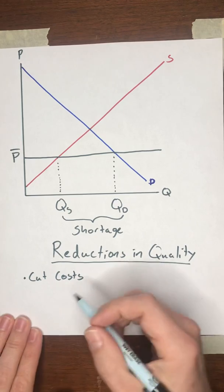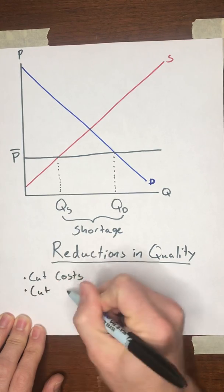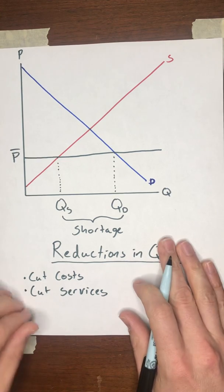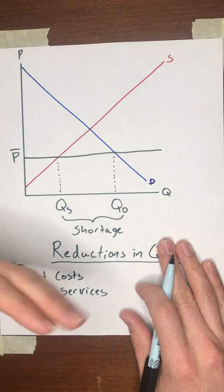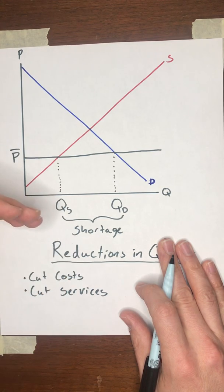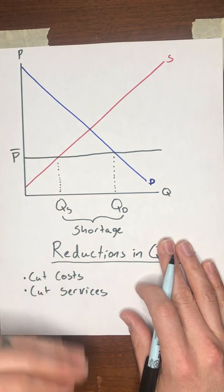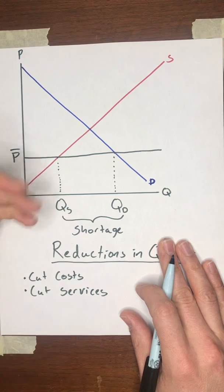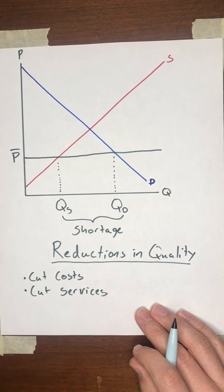You can also, reducing costs doesn't just mean reduce the value of the product. You can also cut services. So, if you're running a restaurant, for example, and there's now a maximum price that you can charge for your food, one way that you might cut costs is lay off some of your staff and you don't have people that you're hiring to wait tables anymore or to bus the tables. Instead, you put that work onto your customers instead. And so, they pay this lower price, but they're also doing some of your work for you and you don't have to pay them for that. That's another way that you might reduce your costs as a seller.